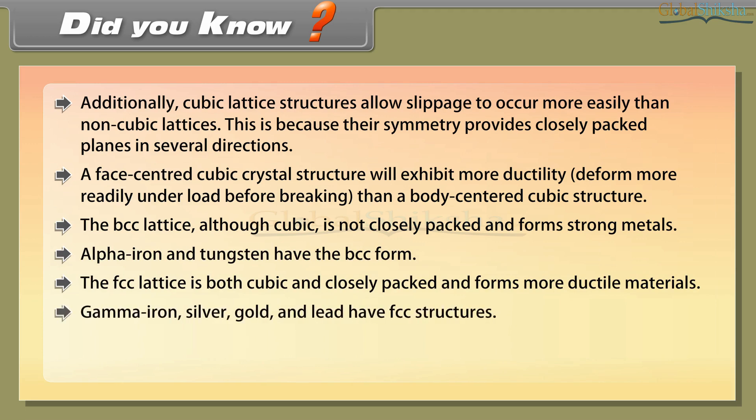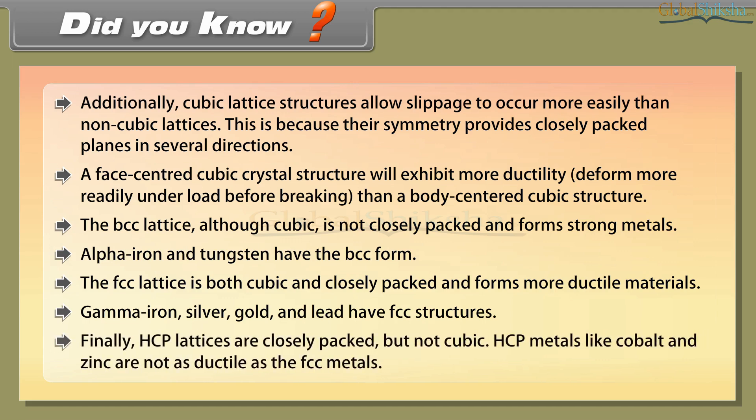Gamma iron, silver, gold, and lead have FCC structures. Finally, HCP lattices are closely packed but not cubic. HCP metals like cobalt and zinc are not as ductile as the FCC metals.